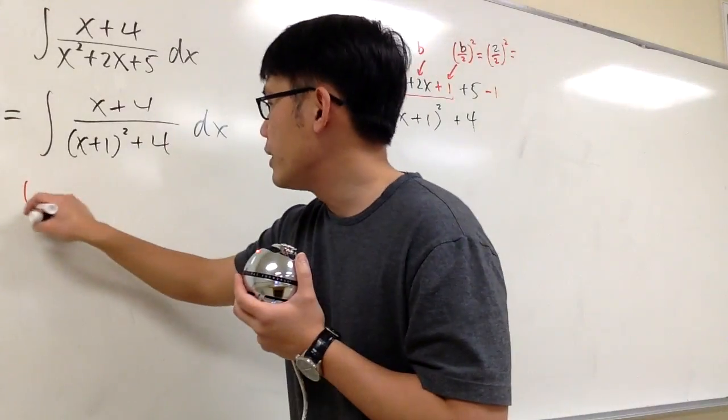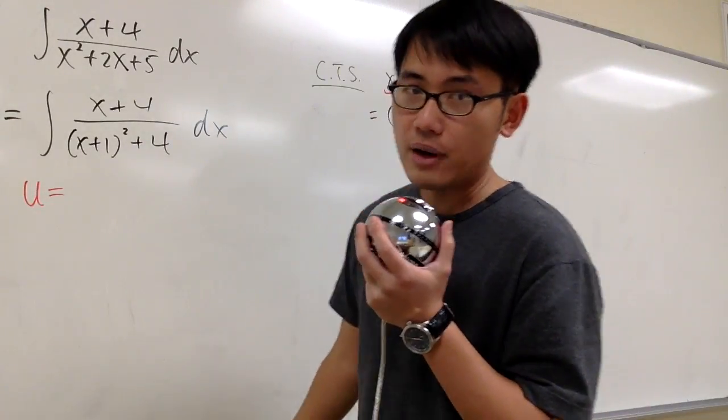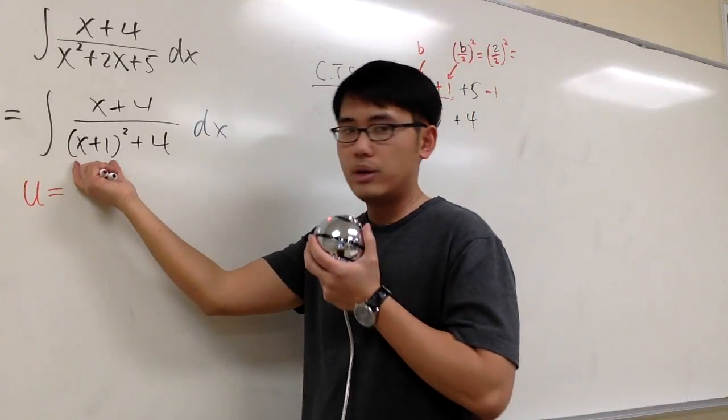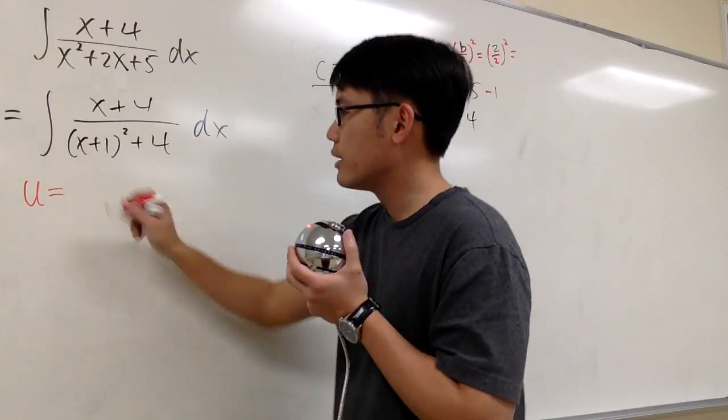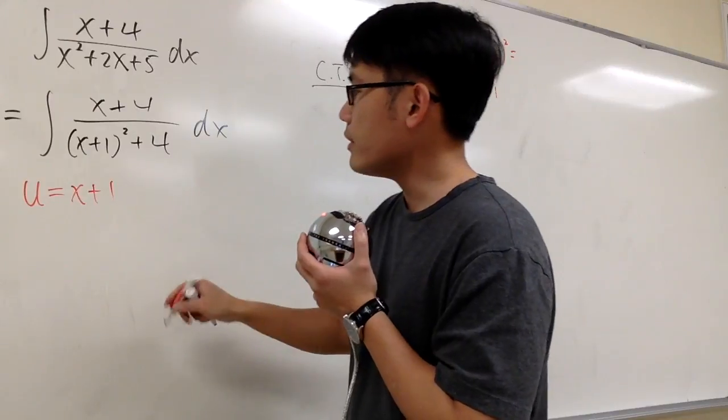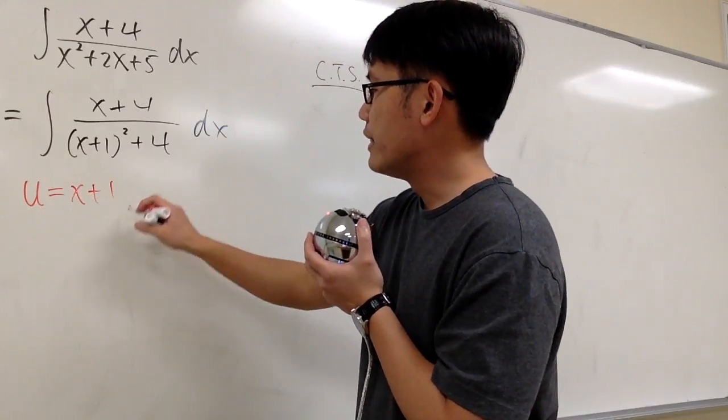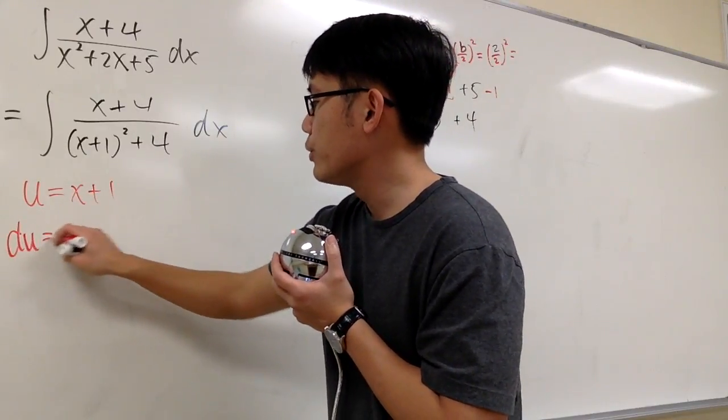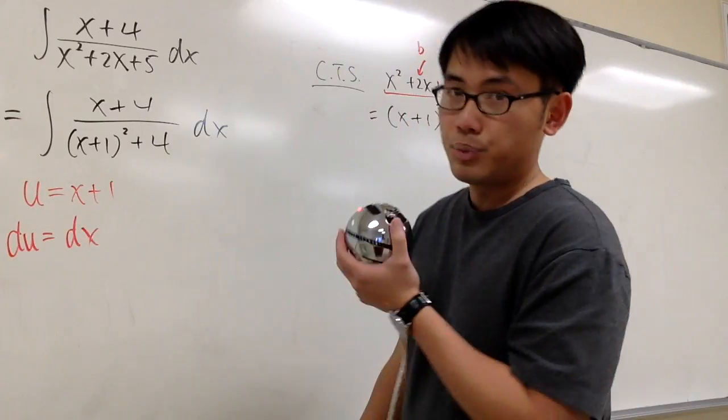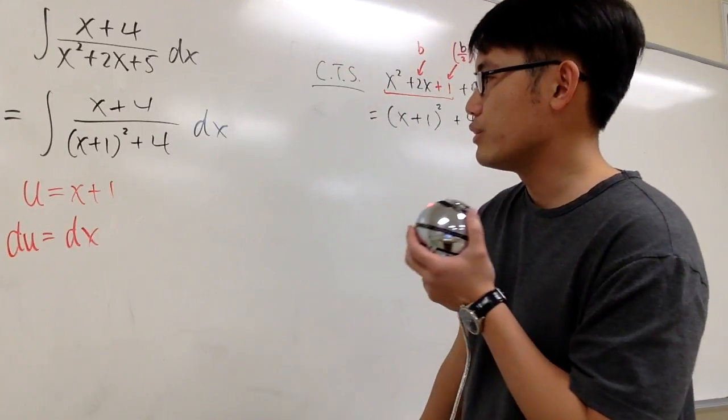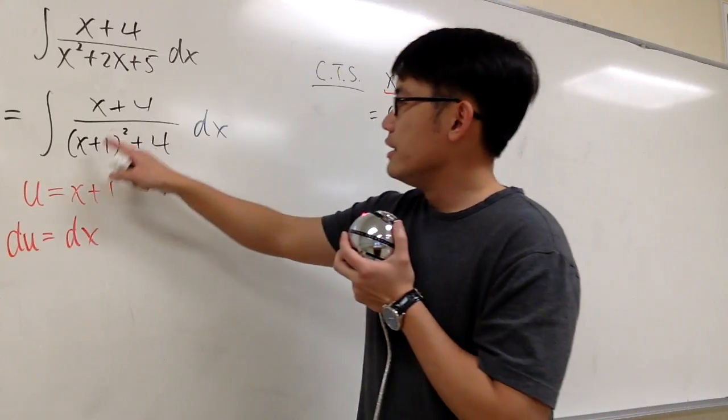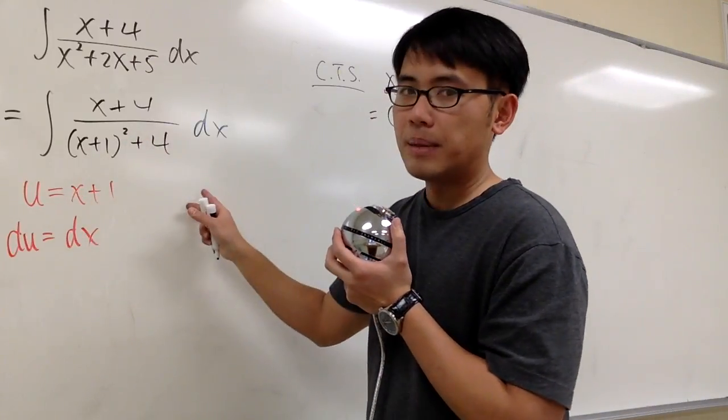And what can we do next? U substitutions. I'm going to let u equal to my inside function, which is the x plus 1. And let's see, what do we get? U is equal to x plus 1, which gives us du equals to dx. So pretty good, we don't need to divide anything, we don't need to multiply anything.